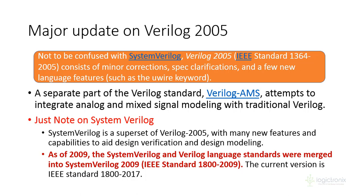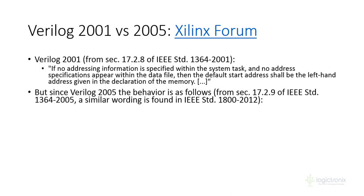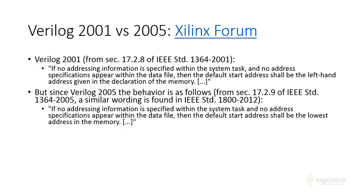Currently IEEE 1800-2017 SystemVerilog is in the market. Let us look at the differences between Verilog 2001 and 2005. There are small updates on keywords and memory addressing. In 2001, memory addressing is a little different than in 2005.